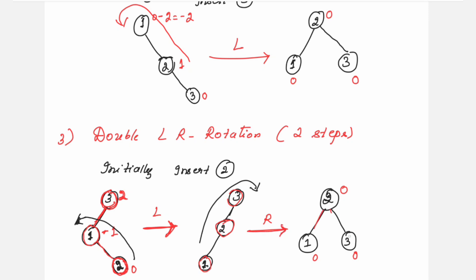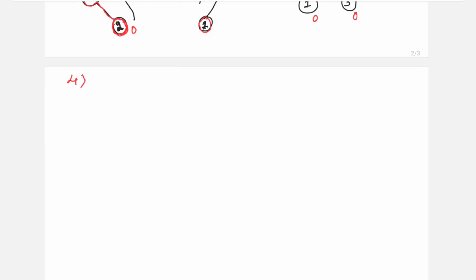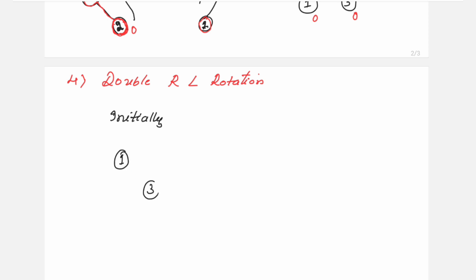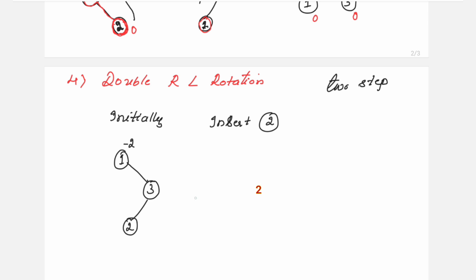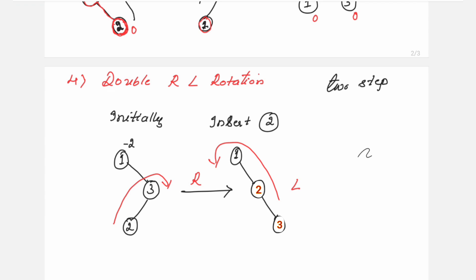The fourth type is the double right-left rotation. Initially you have nodes 1 and 3. Insert node 2 — it comes to the left of 3. The balance factor for node 1 is minus 2, so it is an imbalanced tree. First carry out the right rotation, then perform the left rotation. The resulting tree has balance factor 0 for nodes 1, 2, and 3 — balanced in two steps.